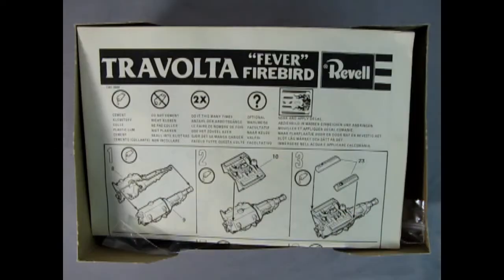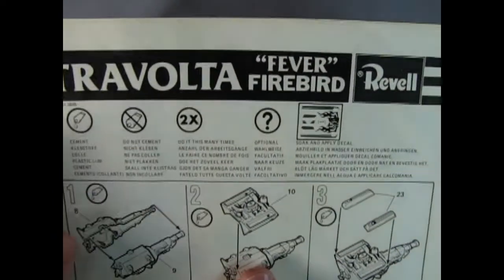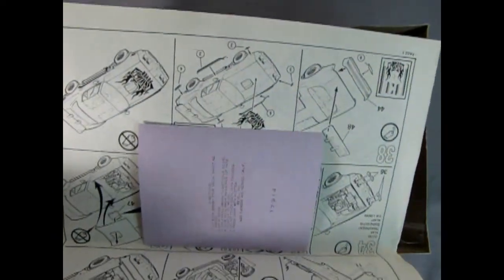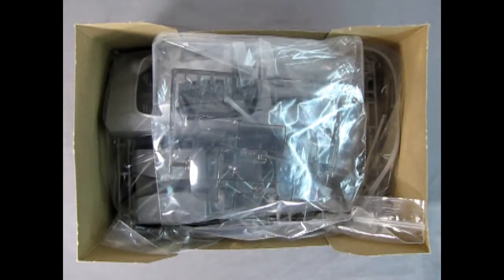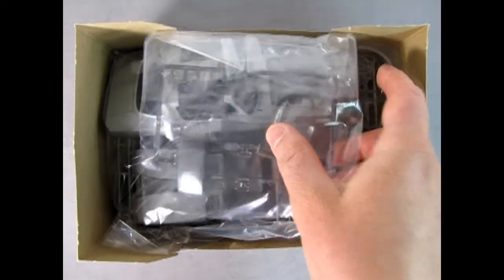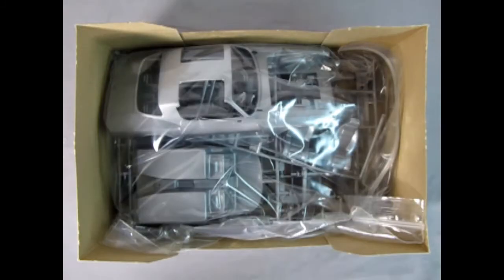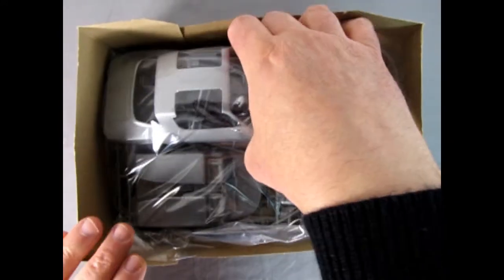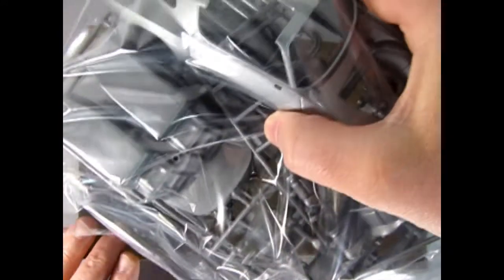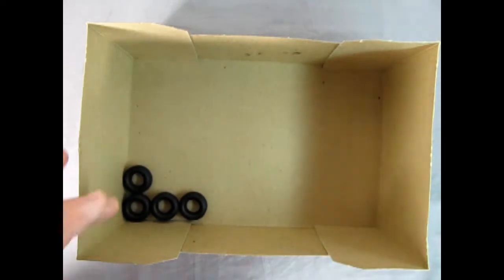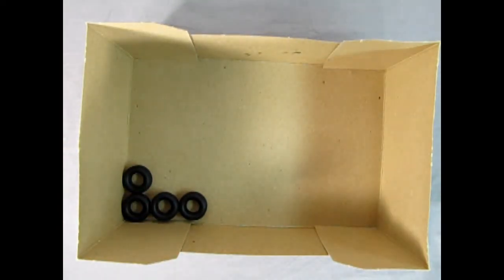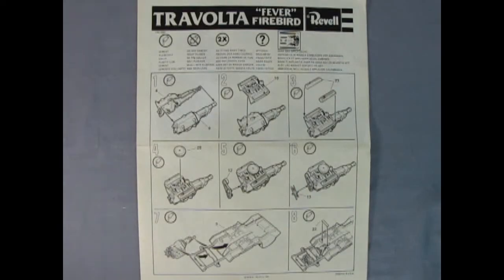Inside the box we have our Travolta Fever Firebird instructions with the decal sheet inside, which we can look at at the end of the video. Then we've got those nice smoke tinted windows in a plastic bag and all our gray components. And then at the bottom, these are our tires.